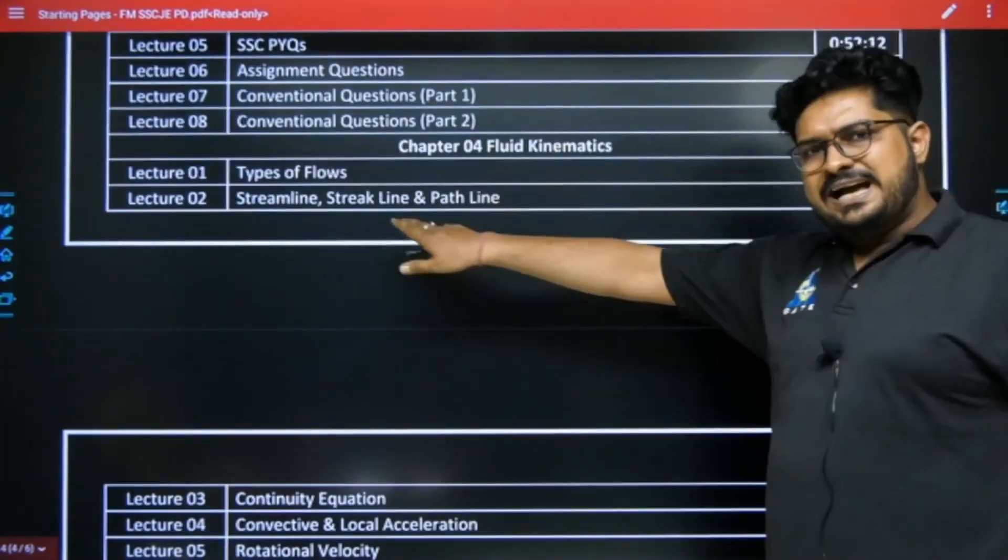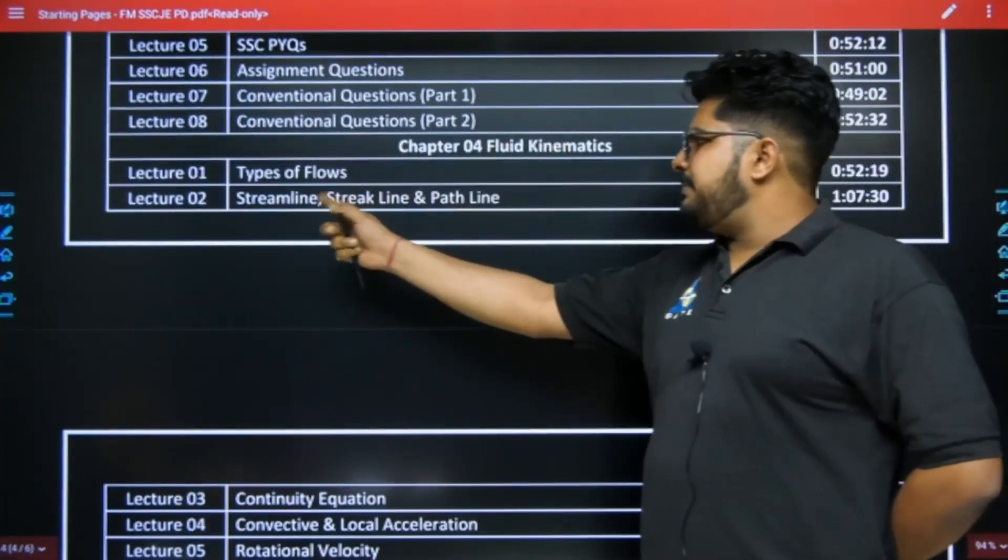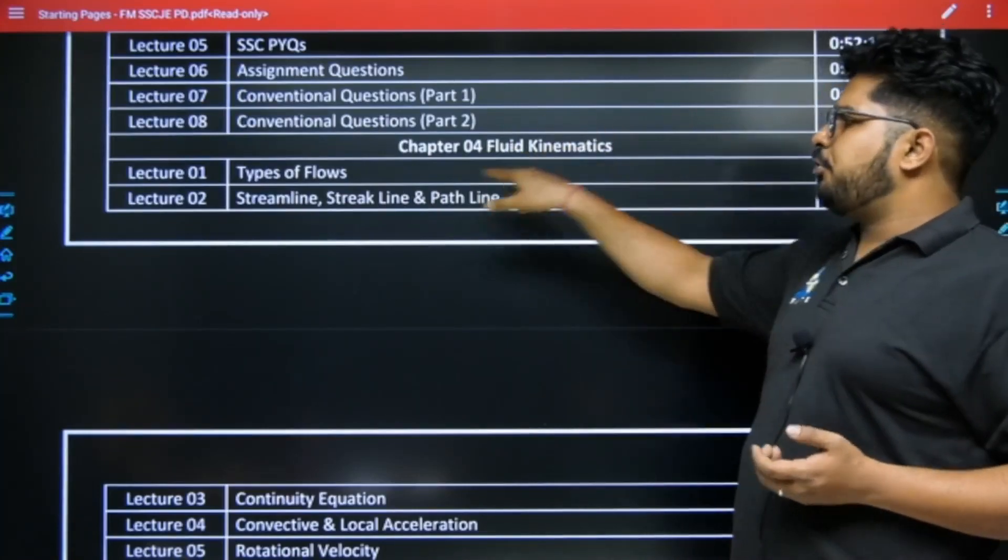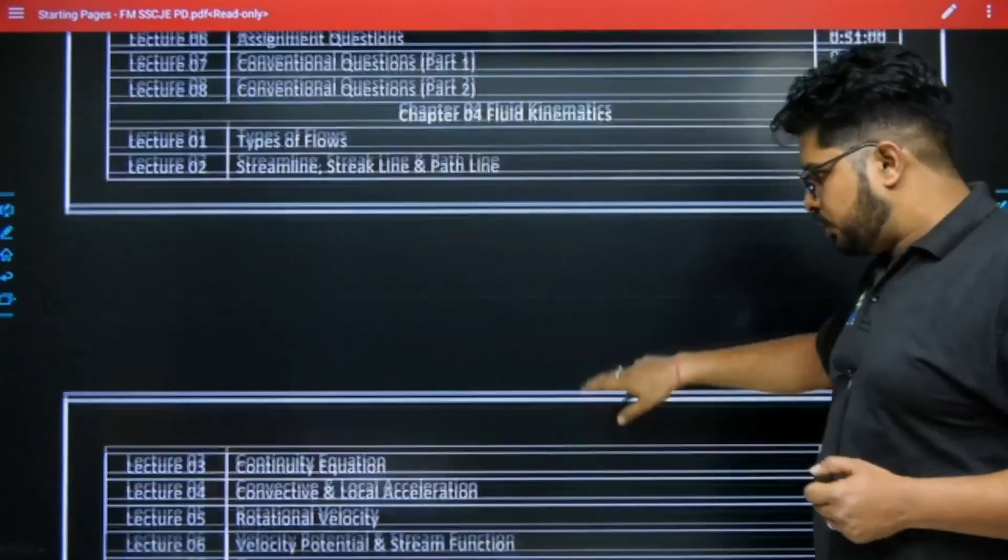You can start topic-wise too. Like you have to learn about stream line, streak line, path line, then you can open in chapter 4.